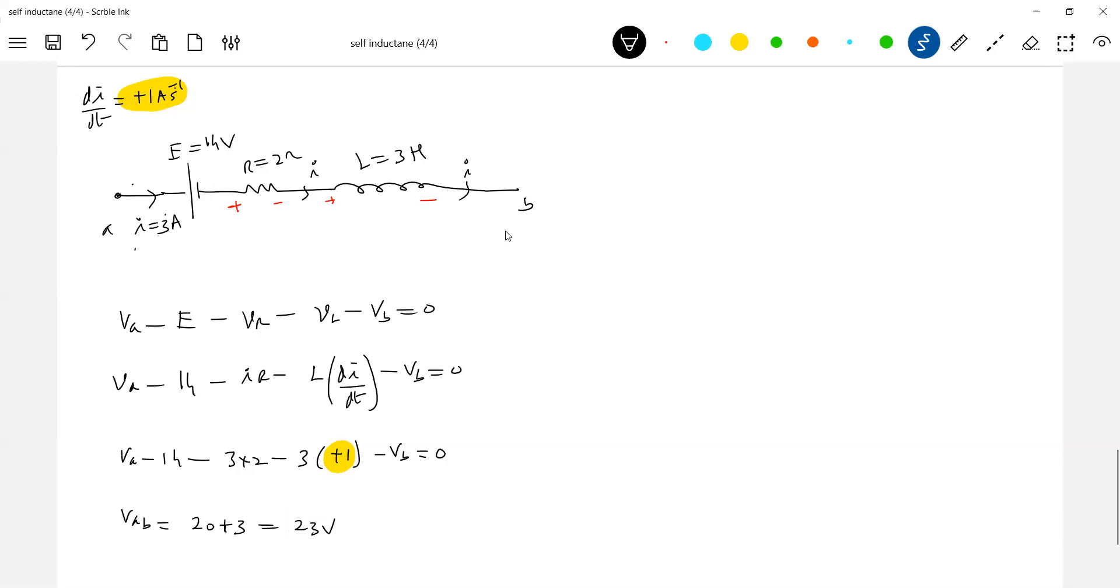What is the potential difference VAB? Now if I replace this with a cell, the same thing instead of this, I'll treat this as a cell. Same circuit. L, R, E, 2, 3, and 3, 3 ampere.